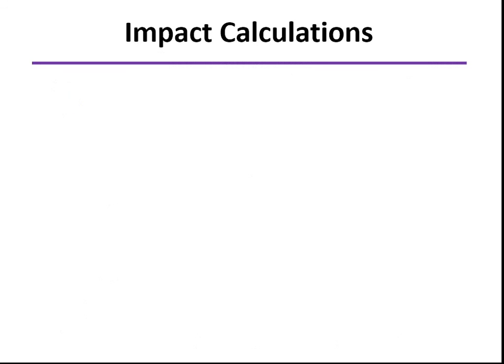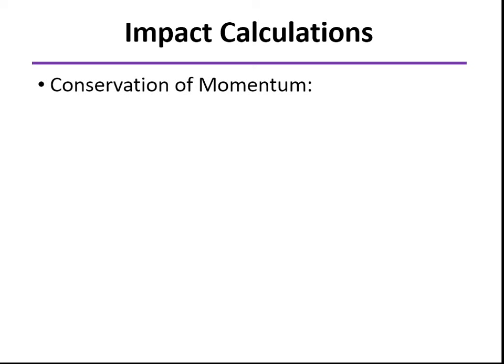So just as a review, when we're doing impact calculations, momentum is conserved during an impact because the forces that the two particles exert on each other are internal forces. If we add the total momentum at the beginning before the collision, which is one, and after the collision, which is two, of the two particles A and B, then that momentum is going to be the same before and after.